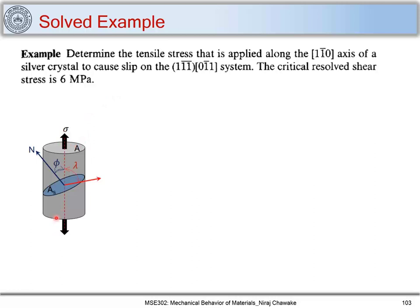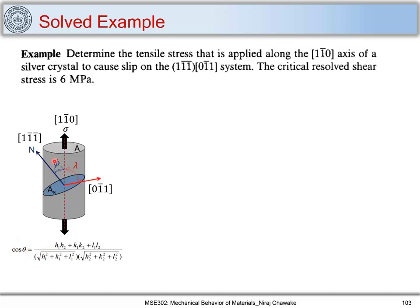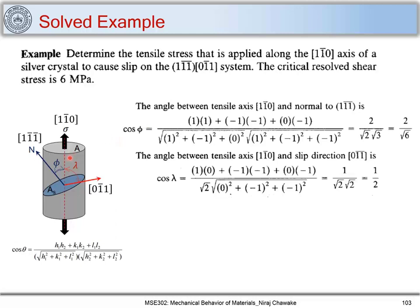For a cubic system, the slip plane normal corresponds to its Miller indices, so the slip plane normal is [1 1̄ 1̄] and the slip direction is [0 1̄ 1]. We can find cos(phi) — the angle between the slip plane normal and the tensile axis — using the dot product formula for cubic systems. Plugging in these values gives cos(phi) = 2/√6.